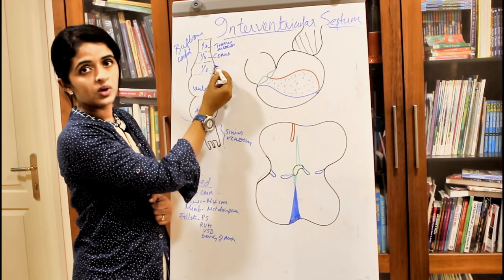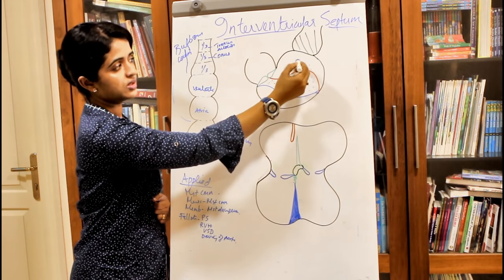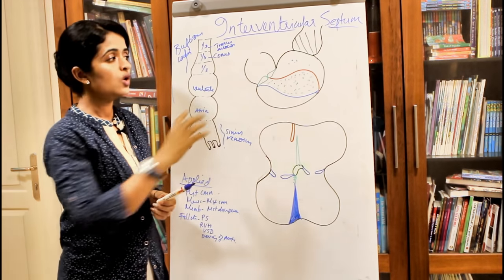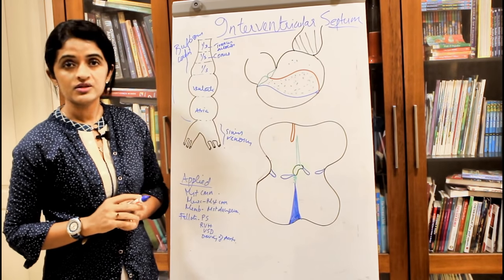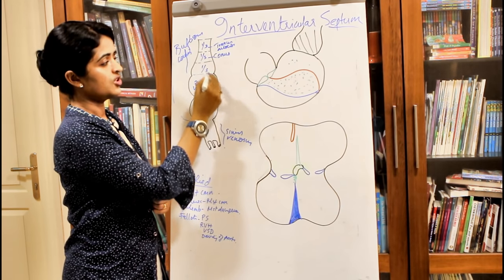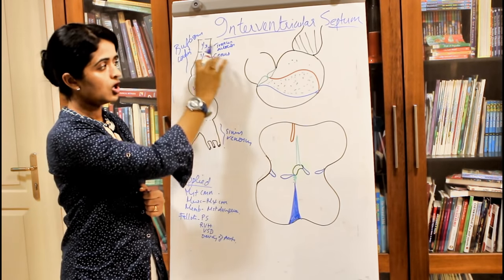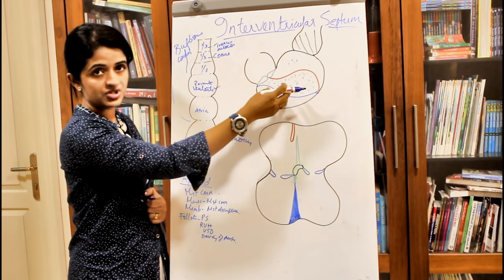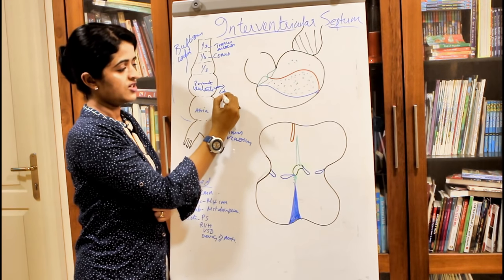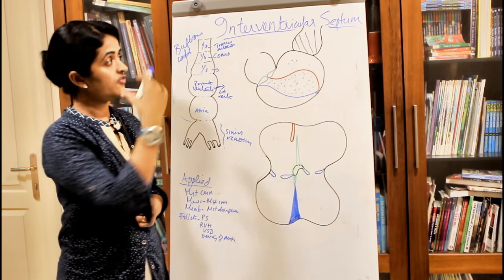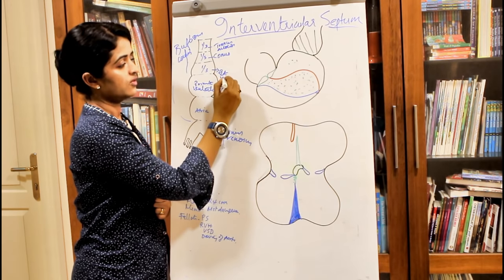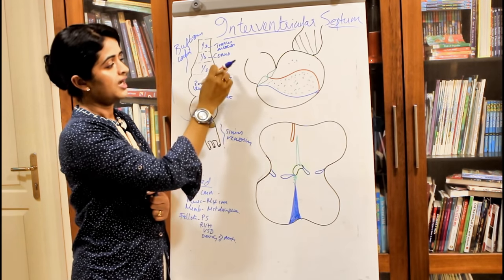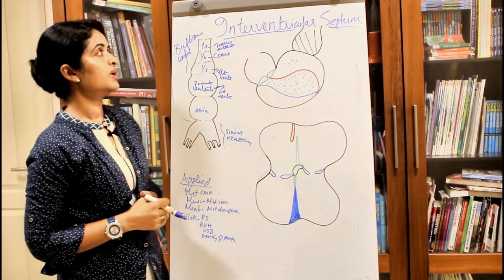The proximal one-third of the bulbus cordis gets incorporated into the primitive ventricle, forming a common ventricle chamber. This common chamber is formed by the union of the primitive ventricle and the proximal one-third of the bulbus cordis. The primitive ventricle portion mainly contributes to the left ventricle, while the proximal one-third of the bulbus cordis mainly contributes to the formation of the right ventricle.